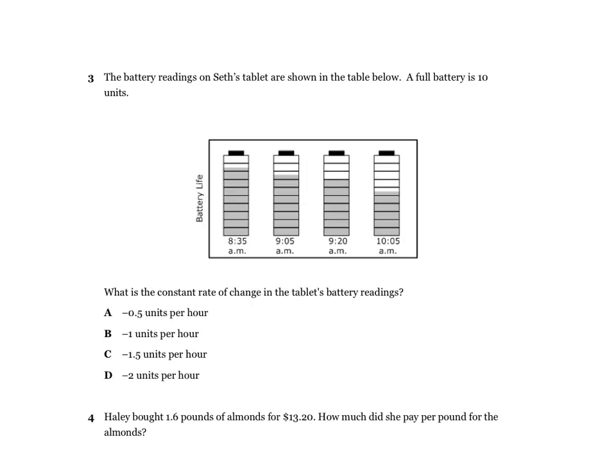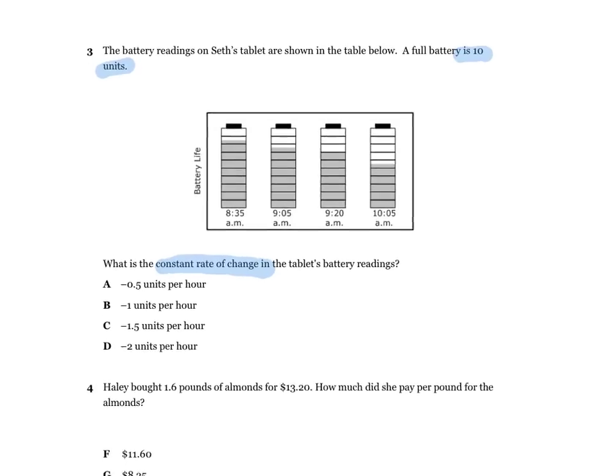Number three: the battery readings on Seth's tablet are shown below. A full battery is 10 units. What is the constant rate of change in the battery readings? A full battery being 10 units is important. We really didn't write a proportion on this — you could write a proportion, or you could just list words and known values since you don't really have an unknown. We didn't do a proportion specifically for this one.